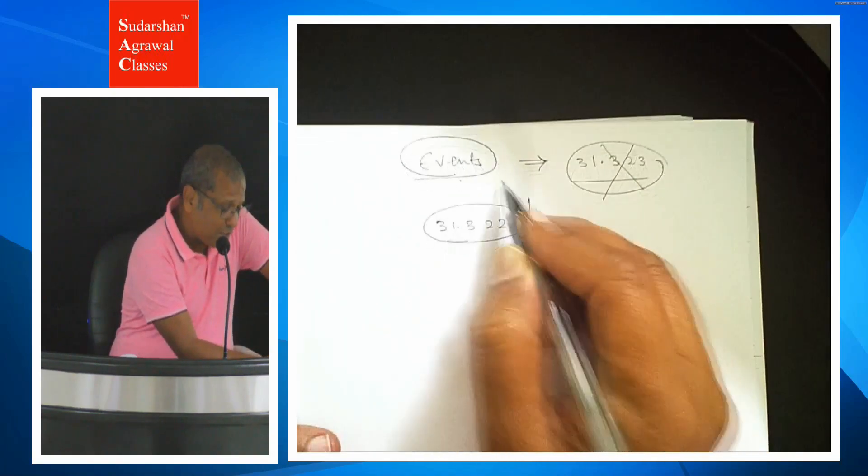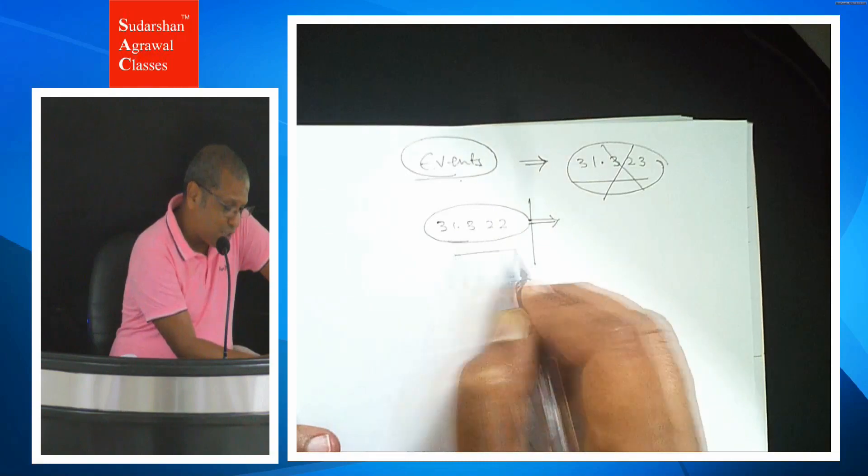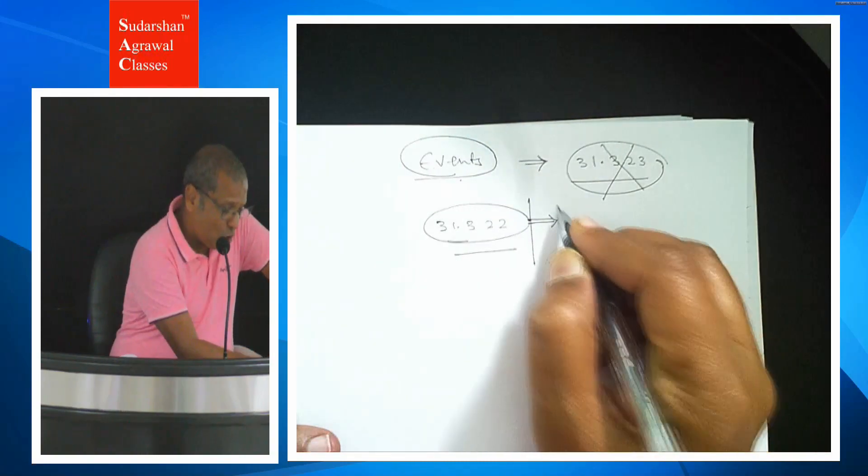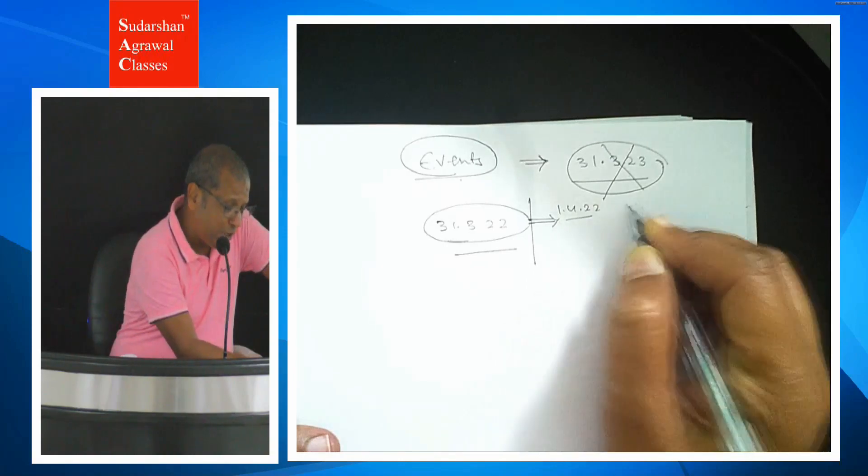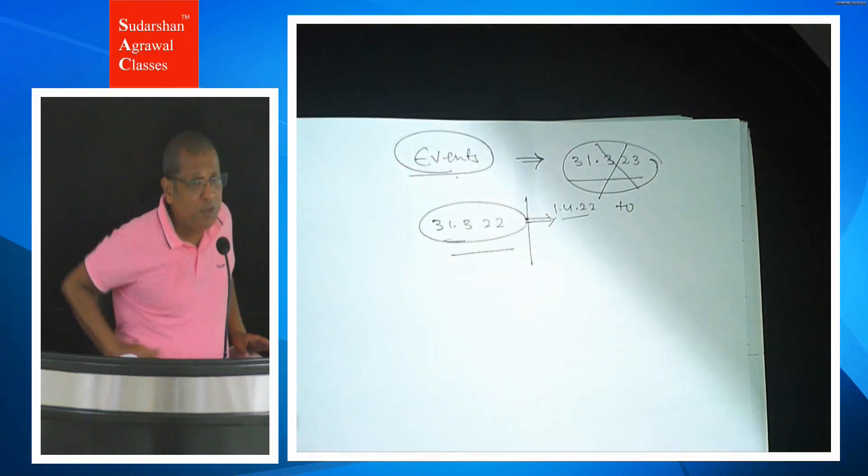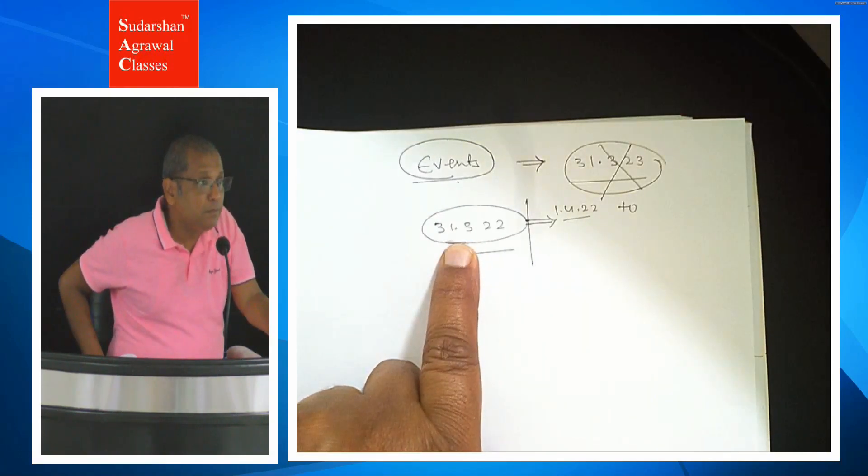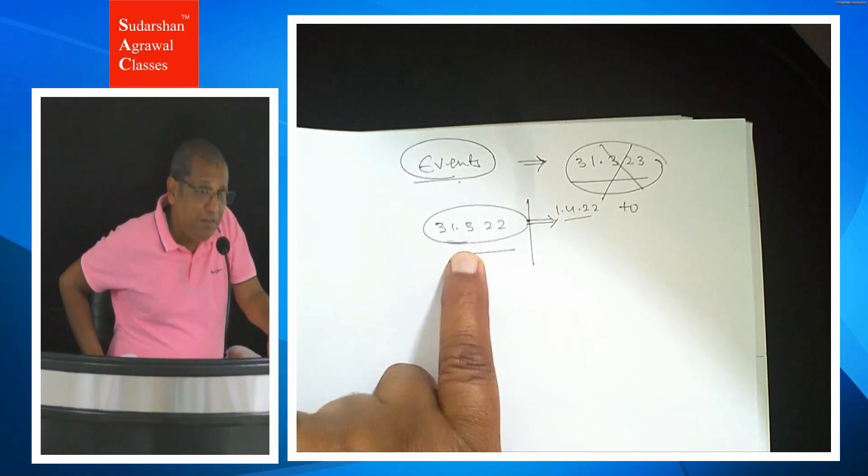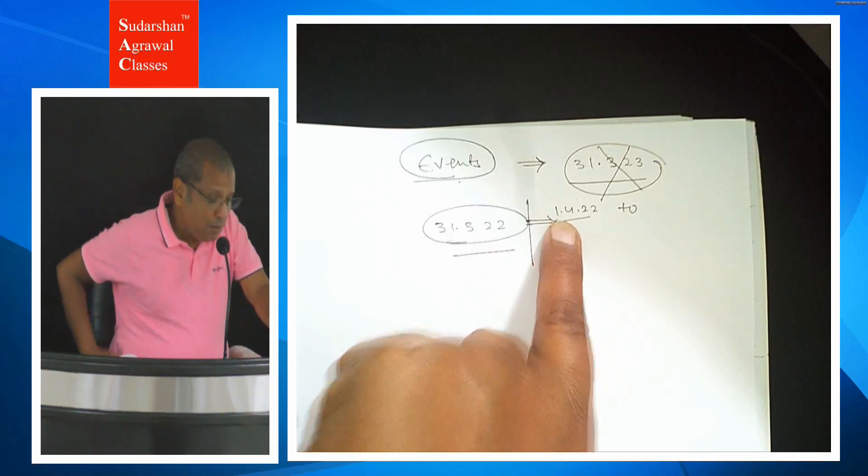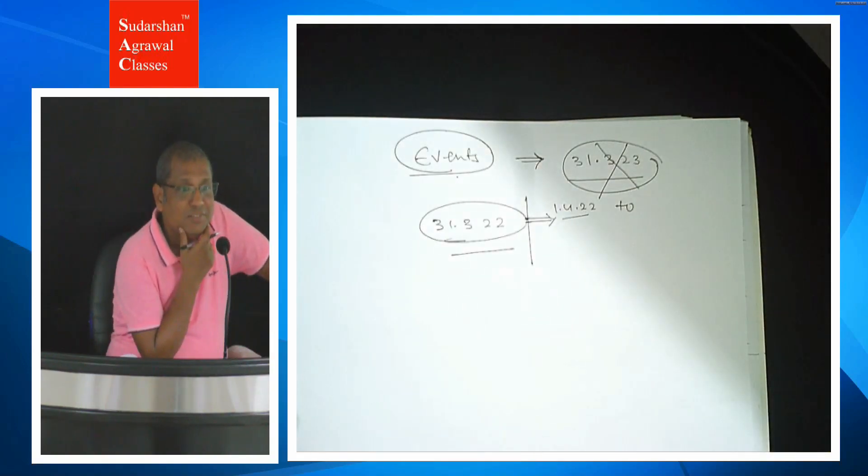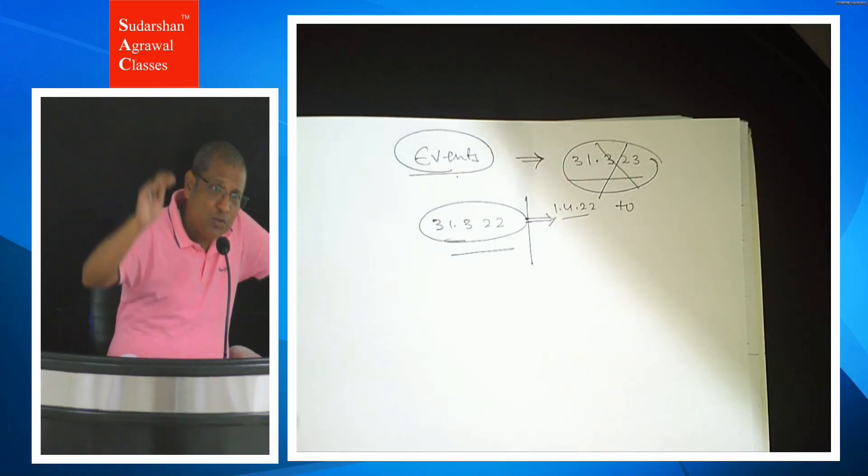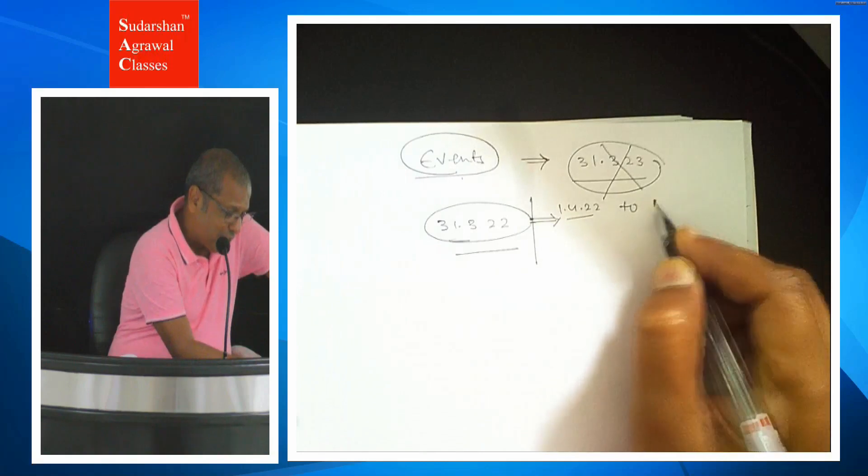So events occurring after the balance sheet date is after this day, that means on and from 1/4/22. 1/4/22 is also in this. All events that occur after the balance sheet date. But sir, till when? There will also be some end. The end is the balance sheet signing date.